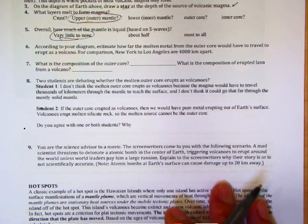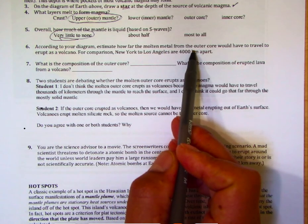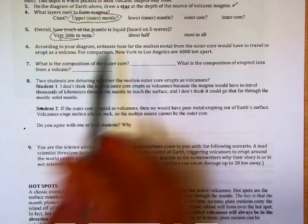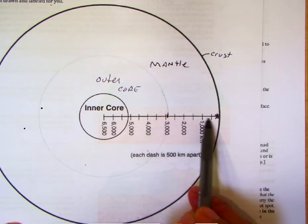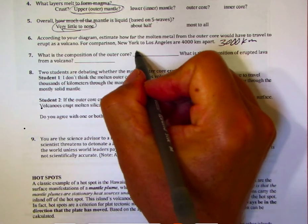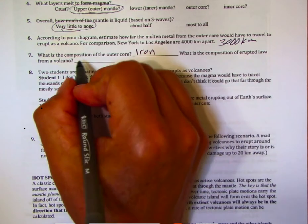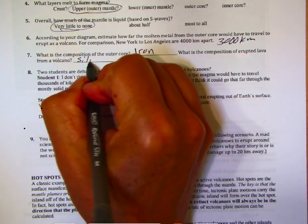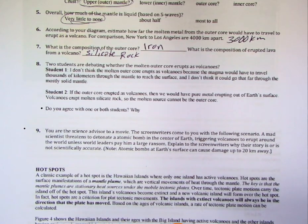According to the diagram, molten metal from the outer core would have to travel around 3,000 kilometers to erupt as volcanoes. Also, the outer core is mostly iron, whereas lavas are silicate rocks containing silicon, magnesium, calcium, sodium, and potassium — very different compositions. This confirms that magmas do not originate from the outer core.